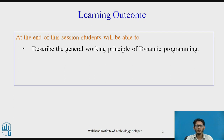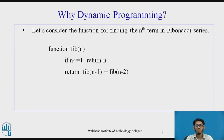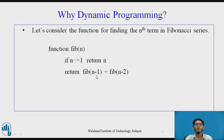Dynamic programming is one of the problem-solving approaches. To understand why we require it, consider a function for finding the nth term in the Fibonacci series — named fib(n), where n is a parameter. If n is less than or equal to 1, return n. Otherwise, return the sum of two recursive calls: fib(n-1) and fib(n-2).